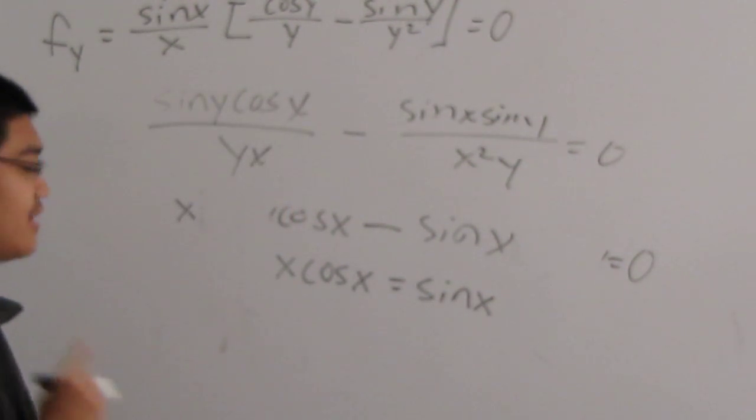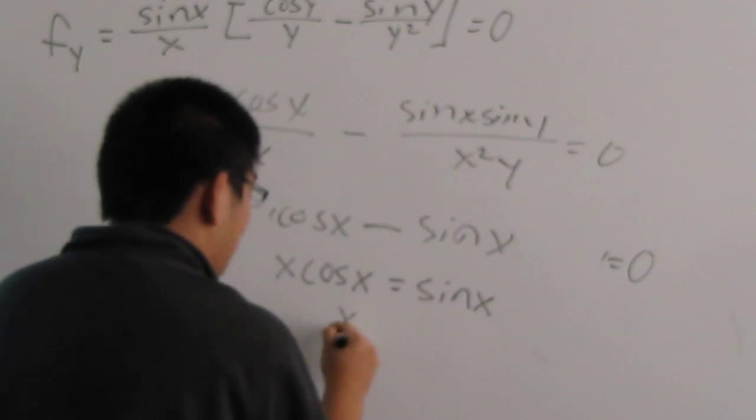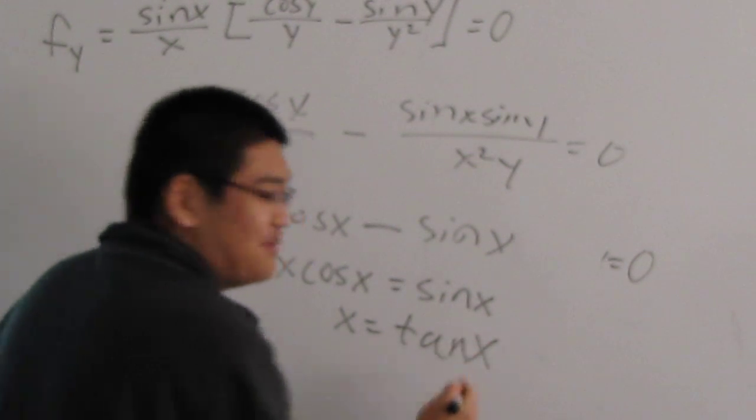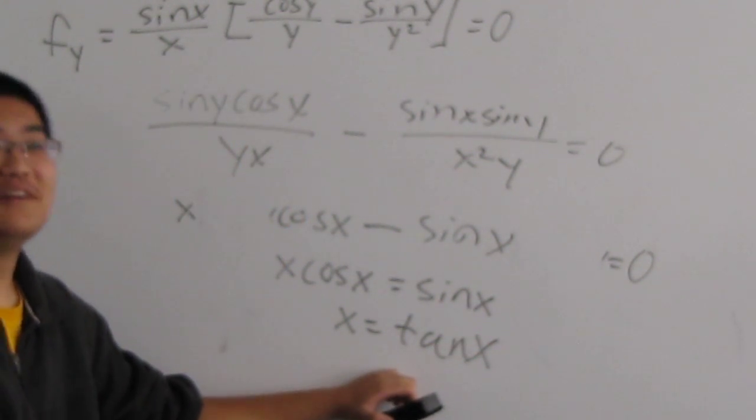And now you can solve for x. Because if you divide both sides by cosine of x, you get x is equal to tangent of x. Voila! An explicit form for x.